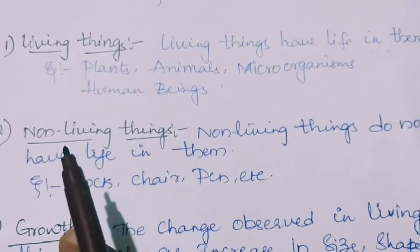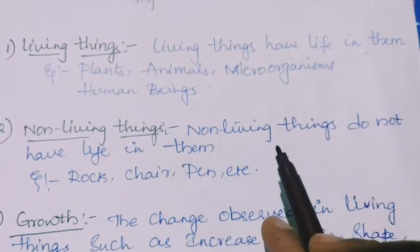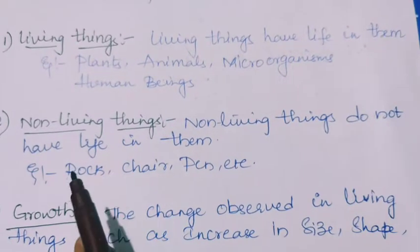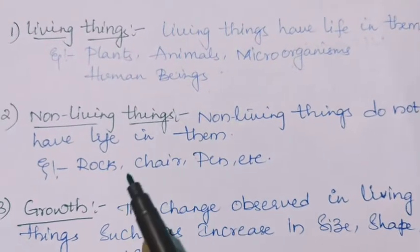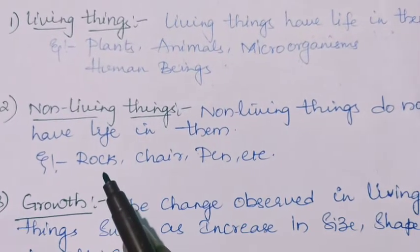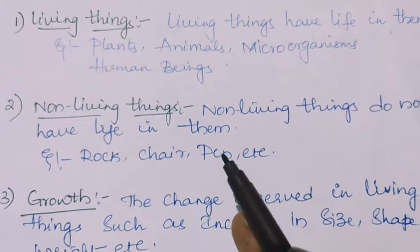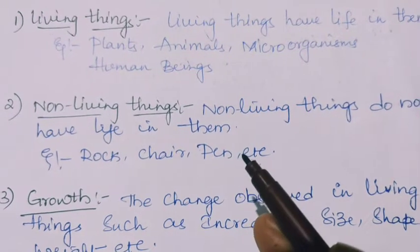Second one: non-living things. Non-living things do not have life in them. For example, rock, chair, pen, pencil, table, etc.